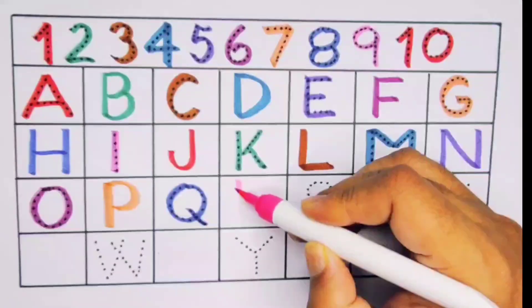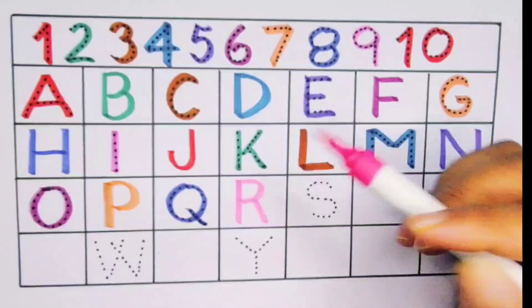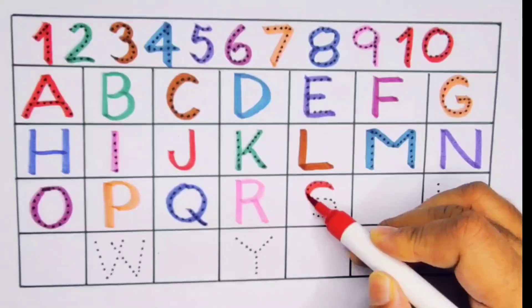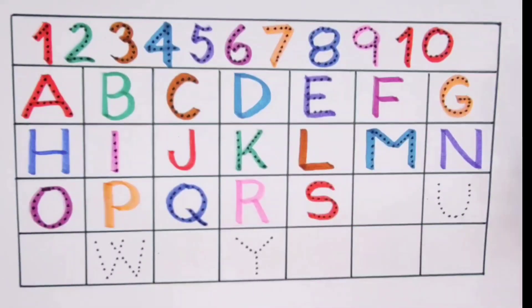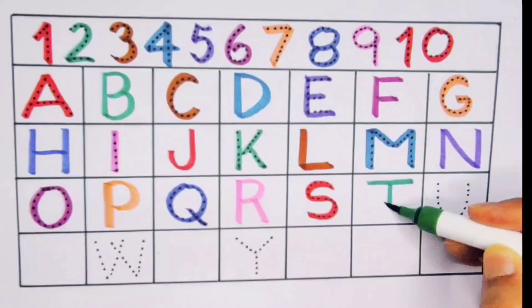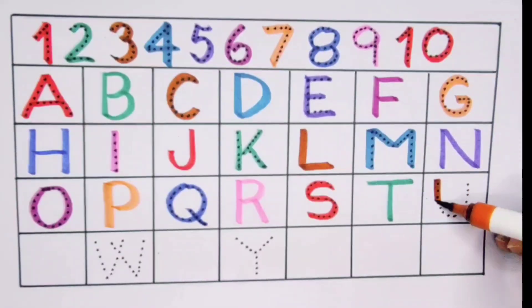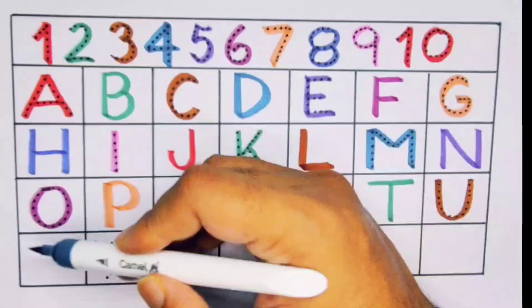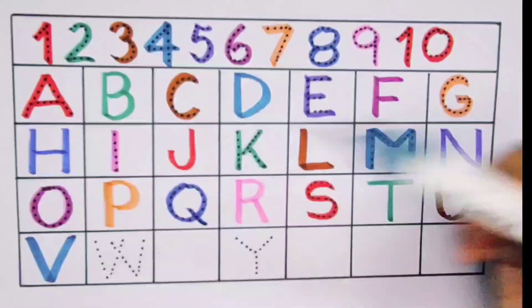Next, Q, Q for queen, Q for queen. Next kids, it's R, R for rabbit, R for rabbit. Next kids, it's S, S for sun, S for sun. Next, T, T for time, T for time.